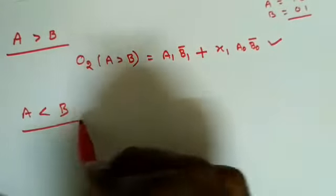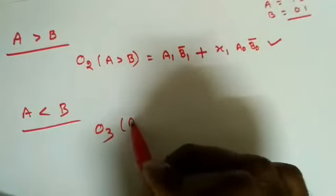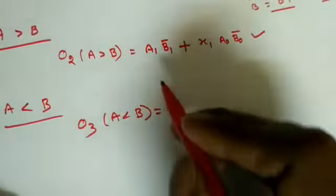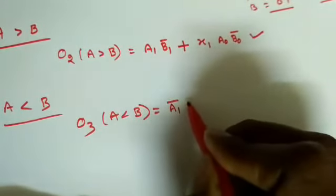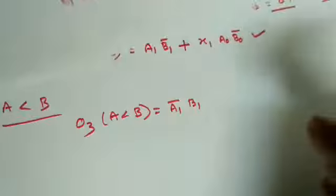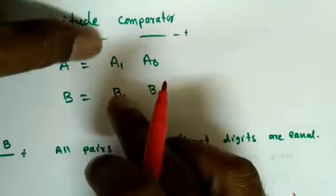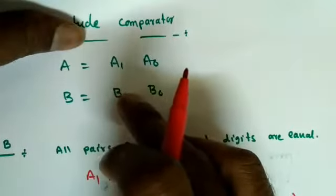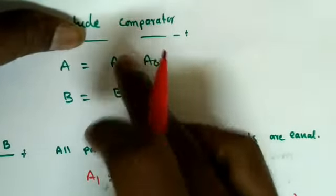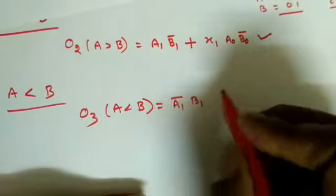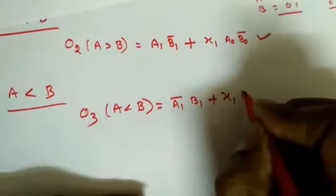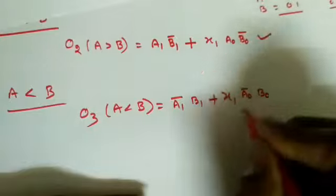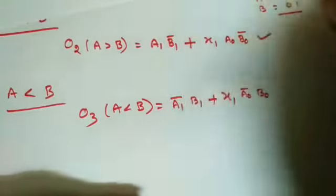Similarly for O3 (A less than B), we check relative magnitude. First term is A1_bar·B1 — B should be greater so B1 should be high and A1 low. If both MSBs are equal, we use X1·A0_bar·B0. The full expression for O3 is: A1_bar·B1 + X1·A0_bar·B0.